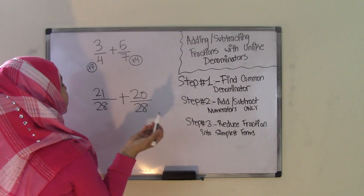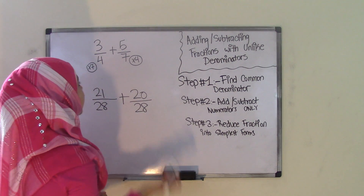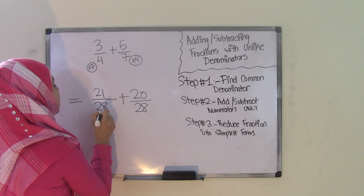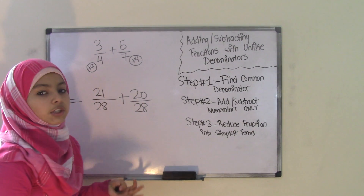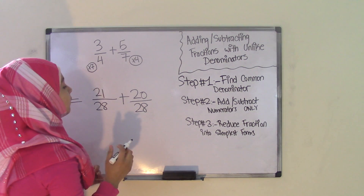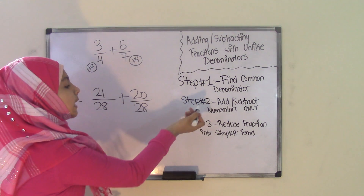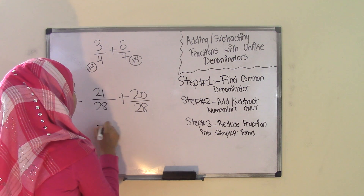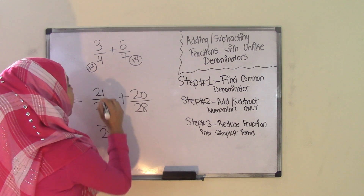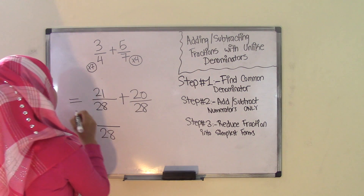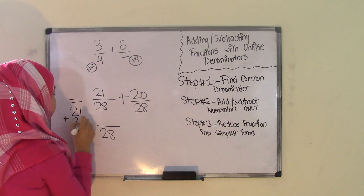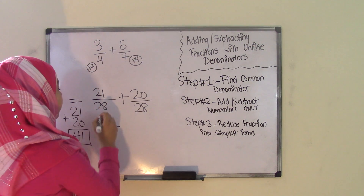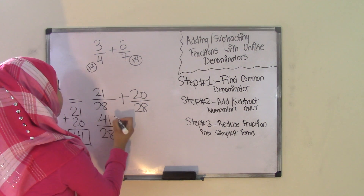So now we have our two fractions with common denominators. Notice that 3 fourths plus 5 sevenths is actually equal to 21 over 28 plus 20 over 28, because they are equivalent fractions. Now we go to step 2: add the numerators only. You keep the denominator as it is — 28 — and add 21 plus 20, which gives us 41. So we have our answer: 41 over 28.